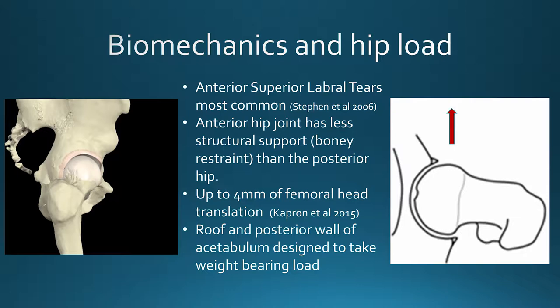The roof and posterior wall of the acetabulum are designed to take our weight-bearing load. When walking, the hip lands in a degree of hip flexion and the ground reaction force up through the foot and into the femur tends to land at the posterior wall of the acetabulum — that's what first takes our weight-bearing load during walking or running. Then as we come through stance phase or when standing, the ground reaction force through the femur is more vertical, meaning the roof of the acetabulum takes our weight-bearing load. That's normal biomechanics around the hip joint.